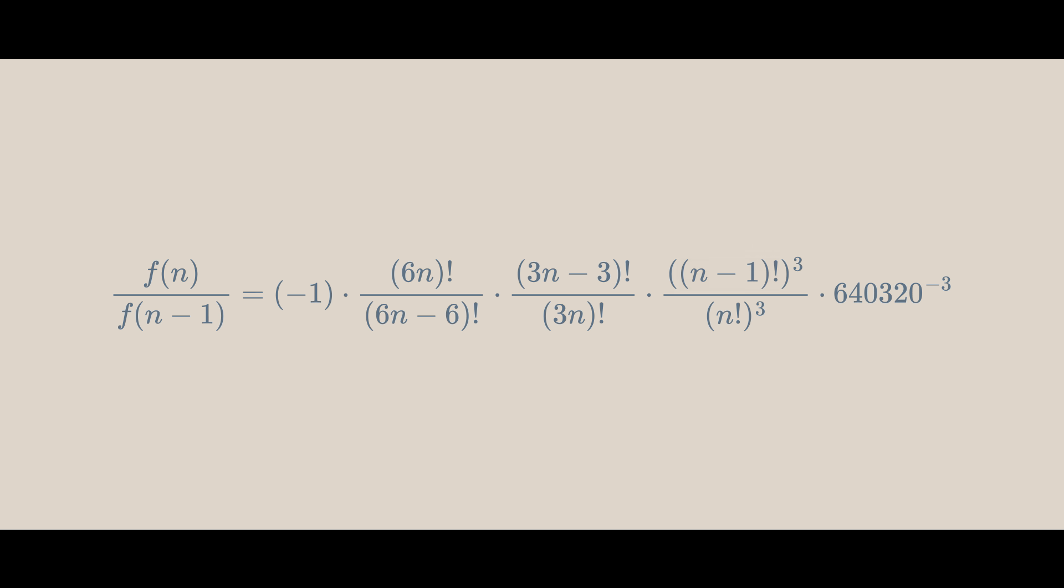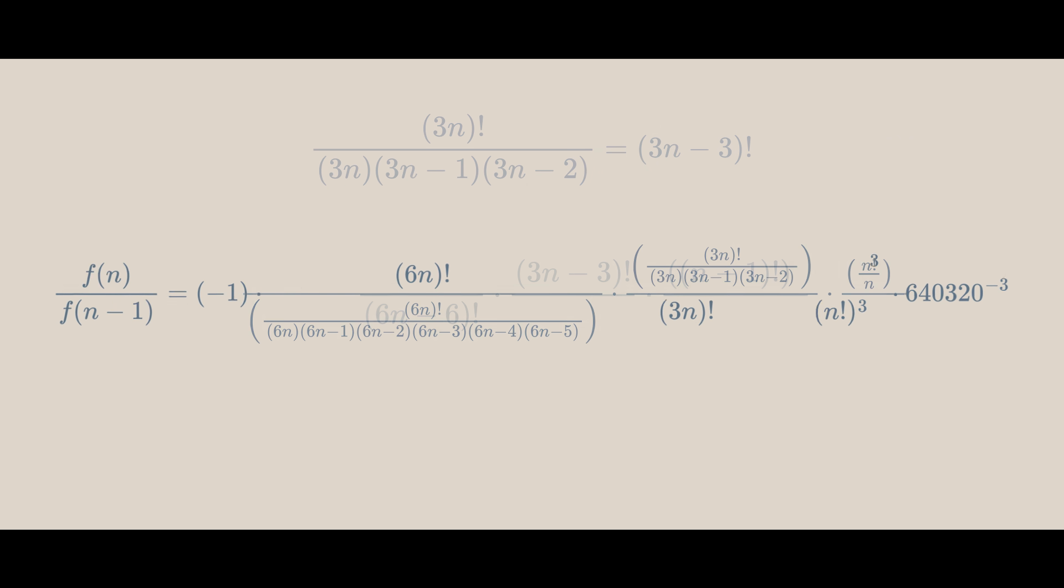Now, let's work on (n-1) factorial. We know that n factorial is the product of natural numbers up to n. And if we divide by n, we get n factorial over n to be the product of natural numbers up to n-1, which is (n-1) factorial. There is a similar logic for (6n-6) factorial and (3n-3) factorial. So we get this, which can simplify to this.